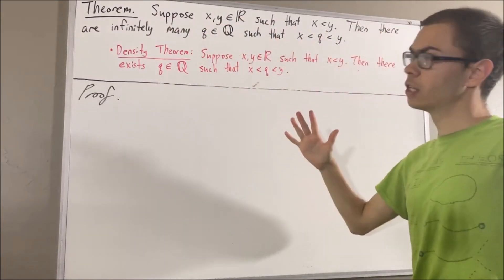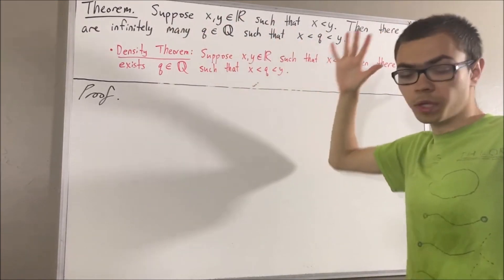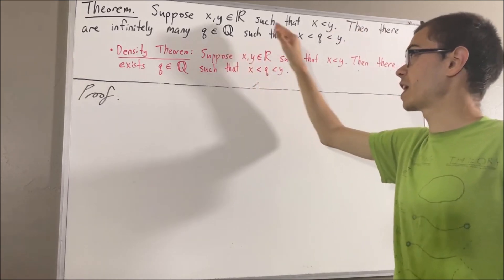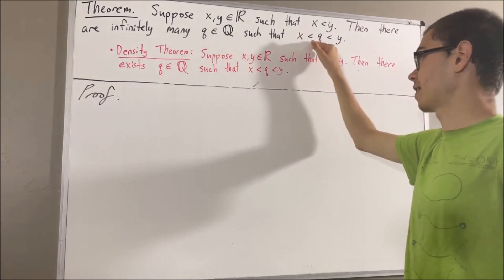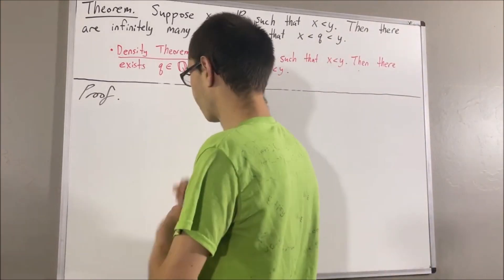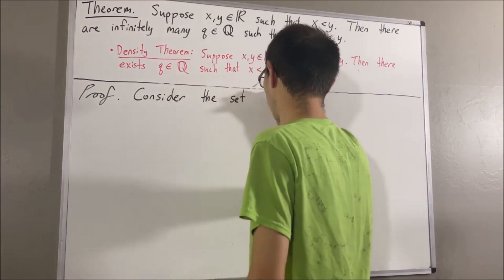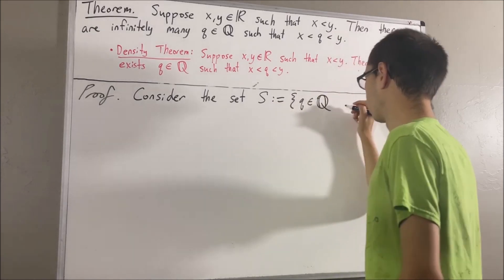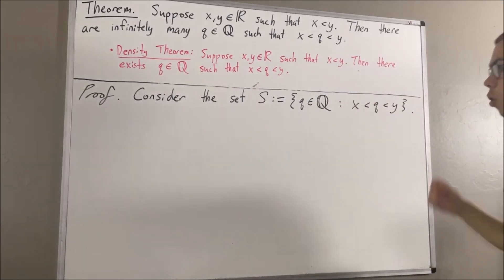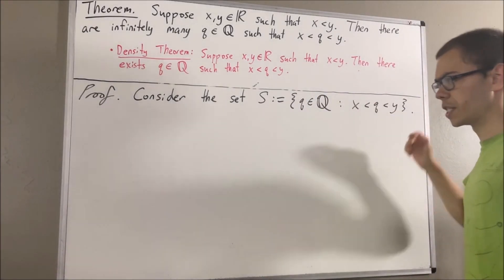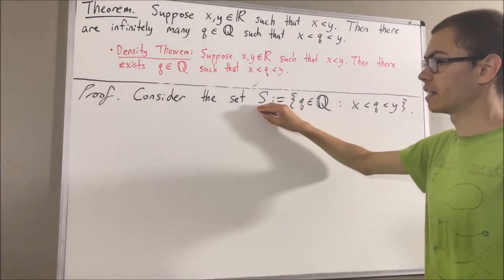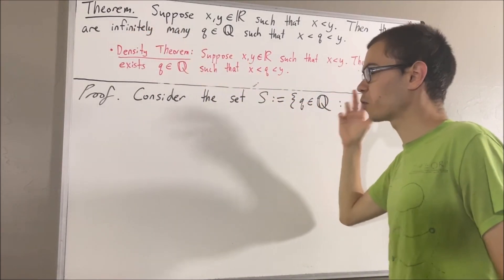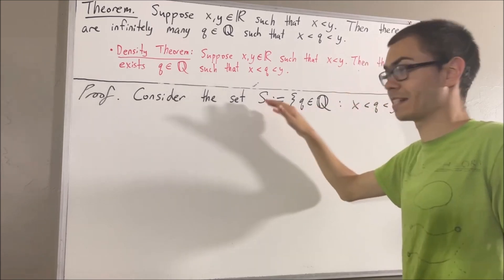To start out the proof, we're going to consider the set of all rational numbers q which satisfy x is less than q is less than y. The whole goal is essentially to prove that S is infinite. Assume for contradiction that S is finite.